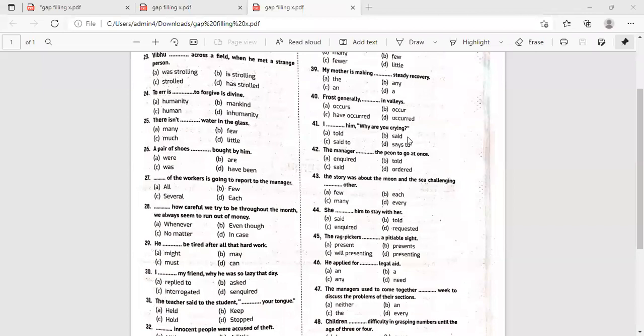Frost generally dashed in valleys. It is something, we're talking about maybe something which is a fact. Frost generally occur in valleys. Occur is incorrect. Have occurred, it's occurred, it's occurs. So frost generally occurs. Occurs means it takes place, it happens over there.